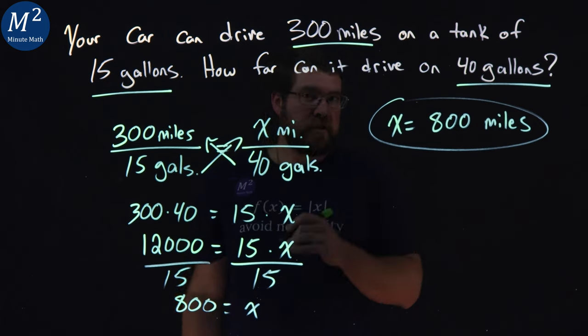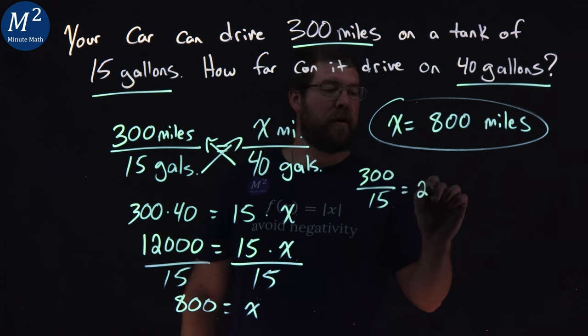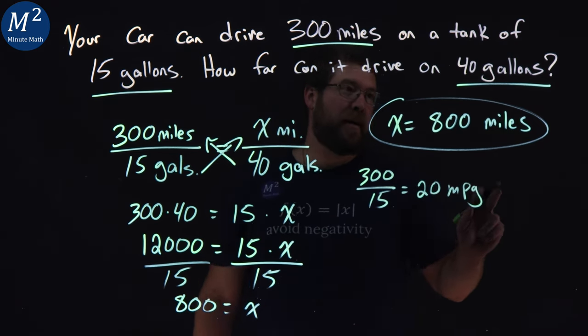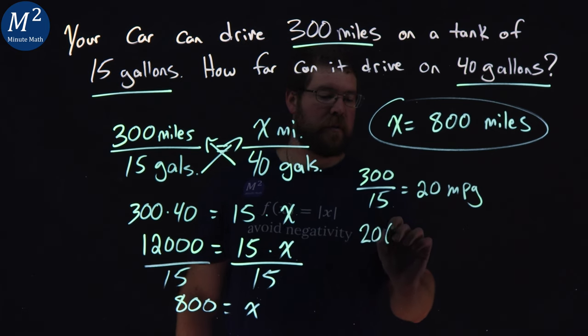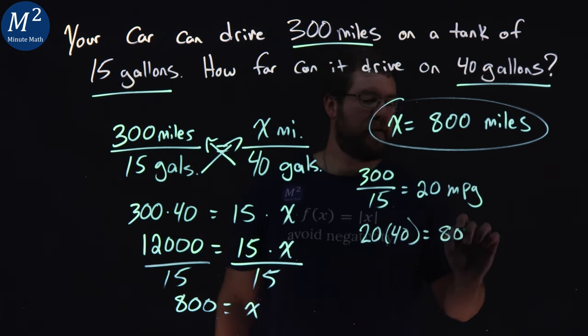So what we could do if we did that - 300 over 15 gives me 20 miles per gallon. And we just multiply that by 40. 20 times 40 would give us 800 miles.